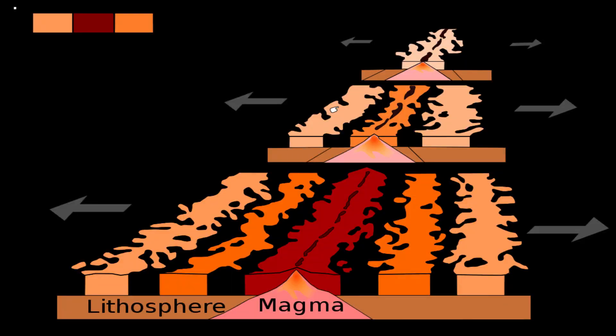Oceanic crust is made of basalt, and basalt contains iron. When basalt lava is still molten, the iron within it is still influenced by the Earth's magnetic field. The iron particles within the lava will align themselves with the Earth's magnetic field, and when the basalt solidifies, that pattern is forever trapped within the rock, which then shows where the lava was when it solidified in relation to the Earth's magnetic field. Throughout the Earth's history,